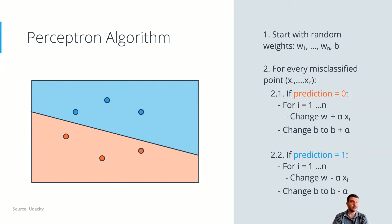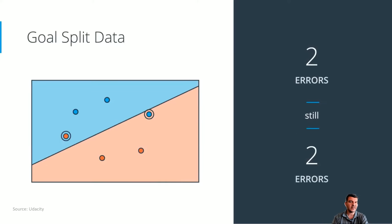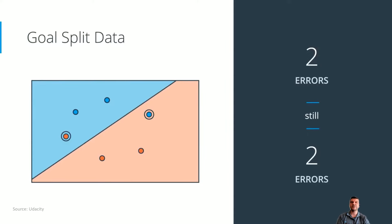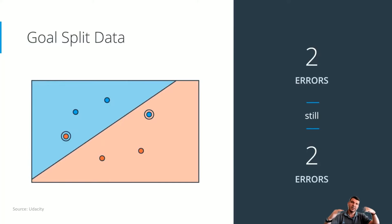This might seem awesome, but there are certain flaws. If we have two errors and adjust our weights with the perceptron algorithm, we might still end up with two errors after each step — and then two errors again, and again. The problem is that we only hear how many errors we have and act accordingly, without counting how wrong we are. We could end up with a few misclassified points that balance each other out between adding and subtracting, and just oscillate forever if we are unlucky.